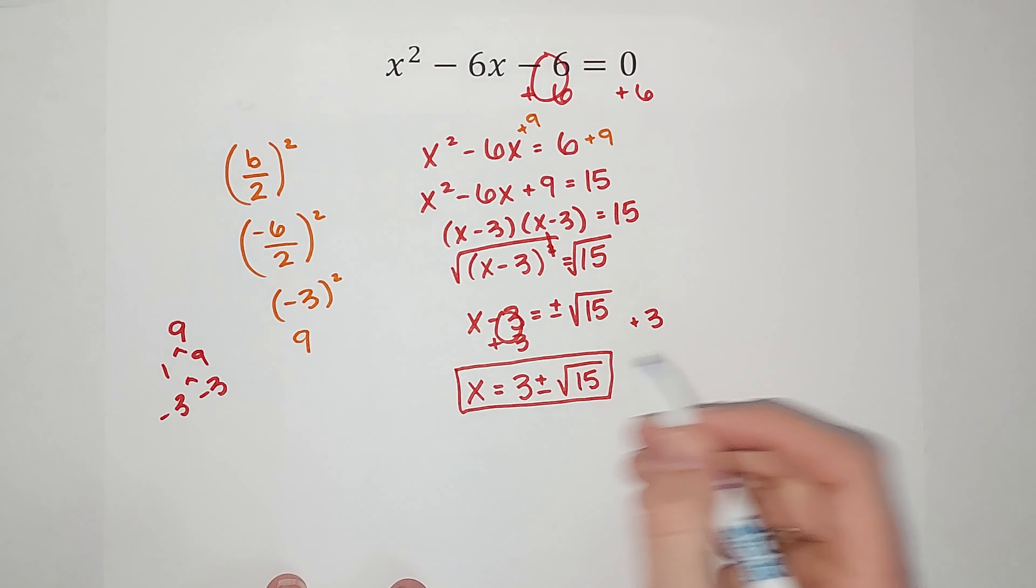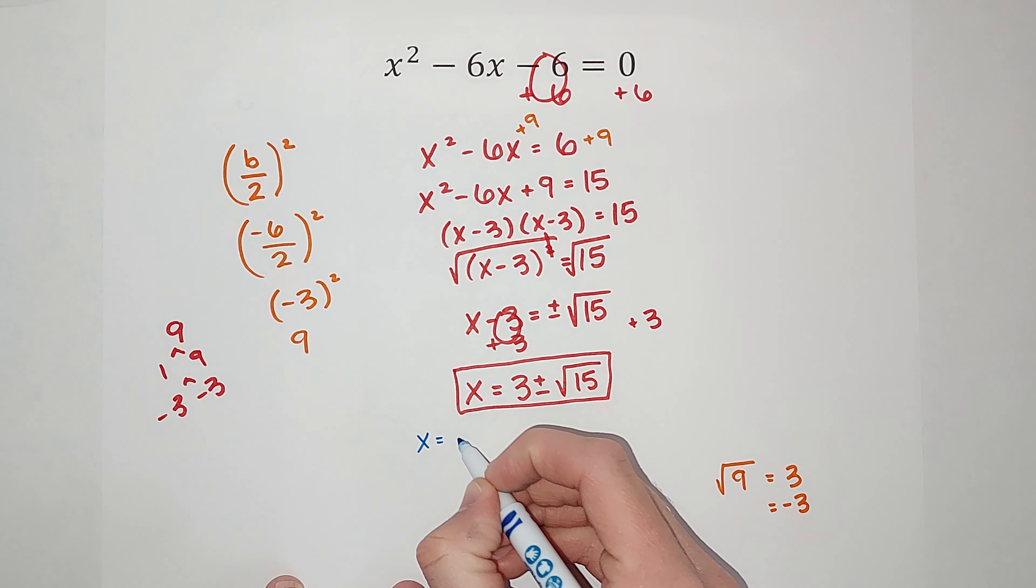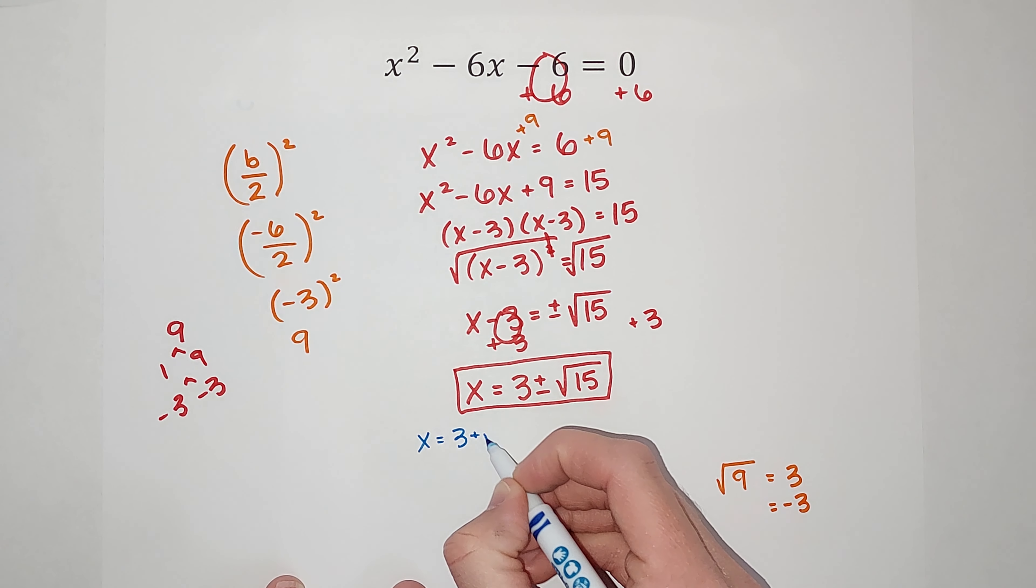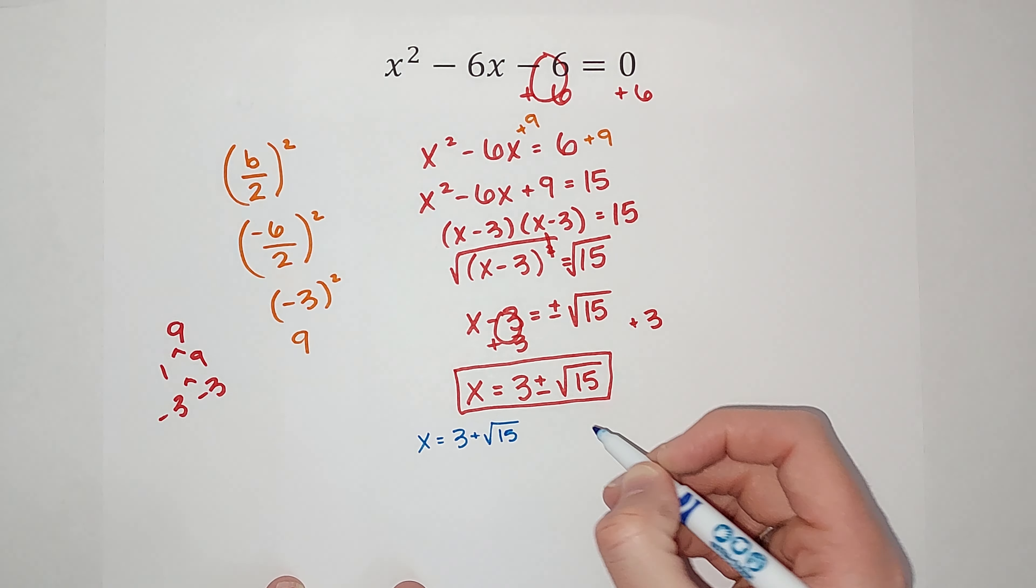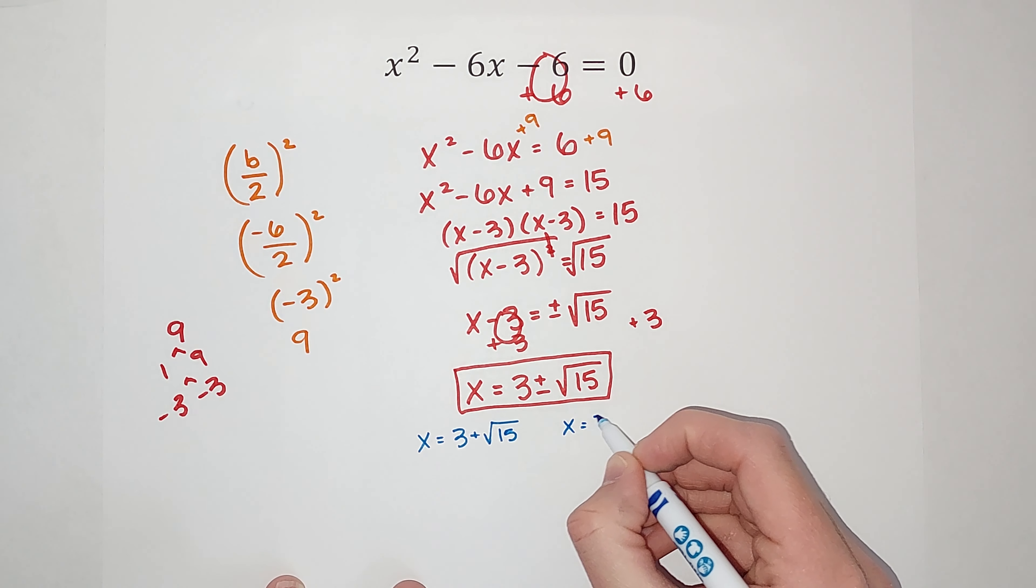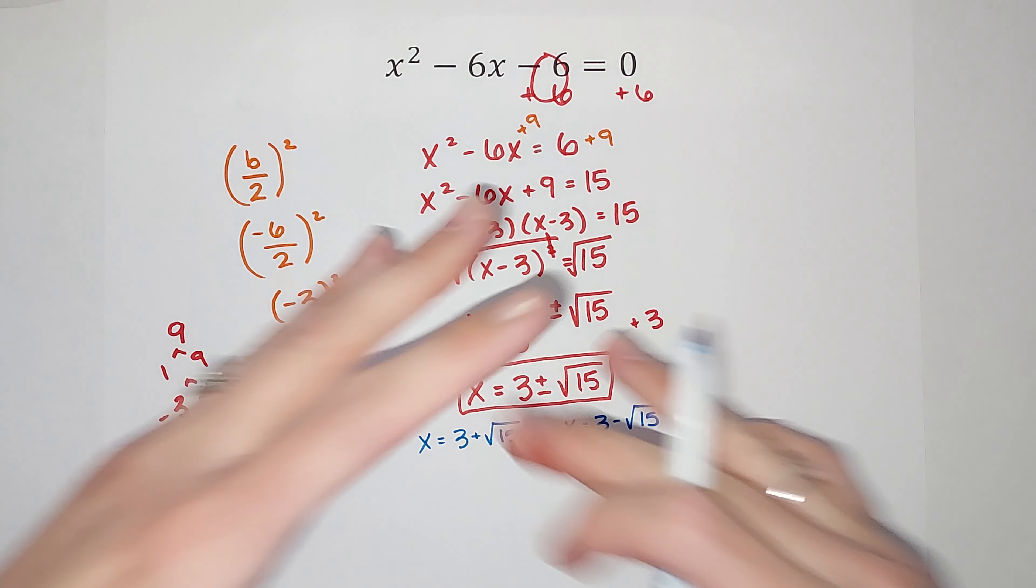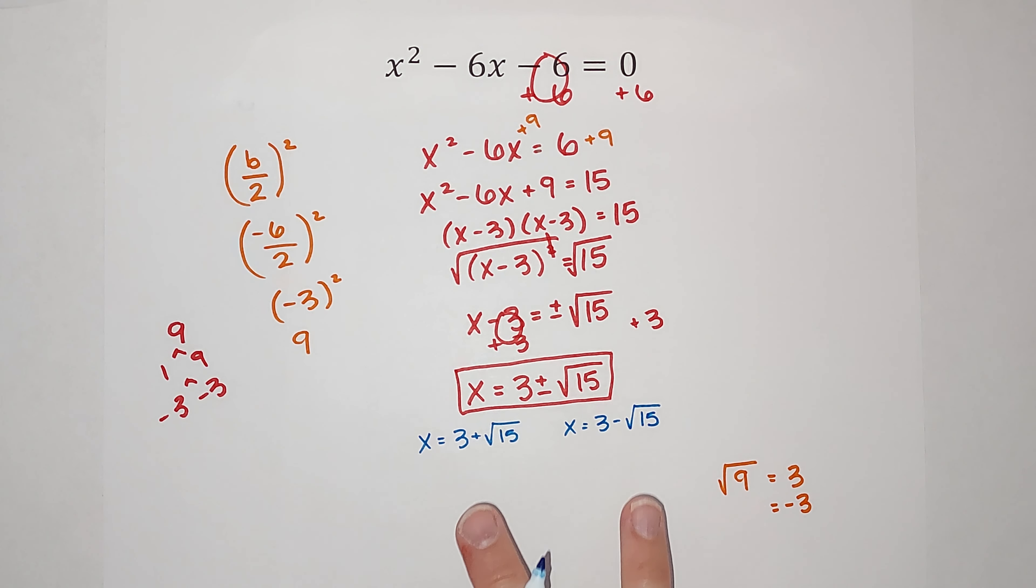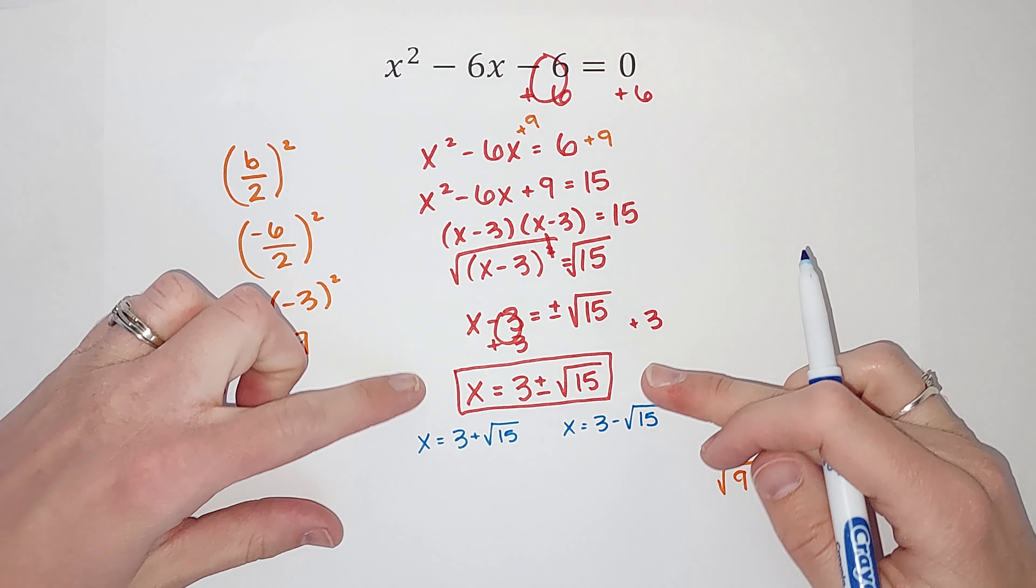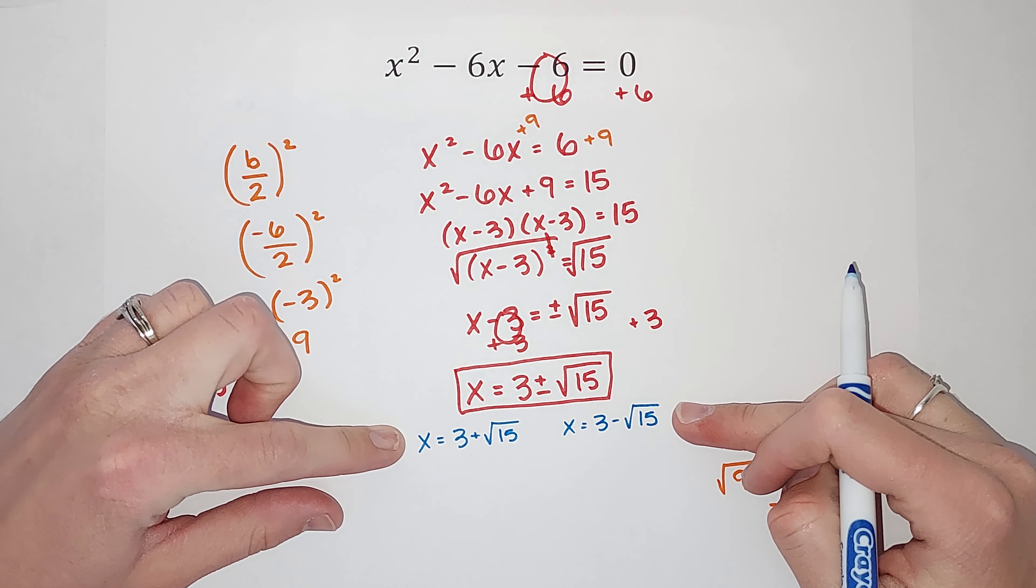It is possible they'll also want you to separate it out. So it's x equals 3 plus the square root of 15 and x equals 3 minus the square root of 15. That's the same thing, just written separated. There is also a slight chance you could plug in the square root of 15 to your calculator, get an ugly decimal, add 3. Also over here with it negative. But most likely, I think most teachers are probably going to either want it in this format or this format.